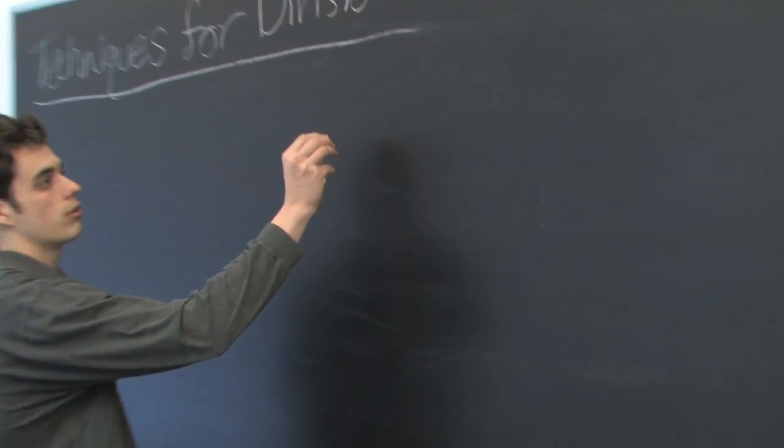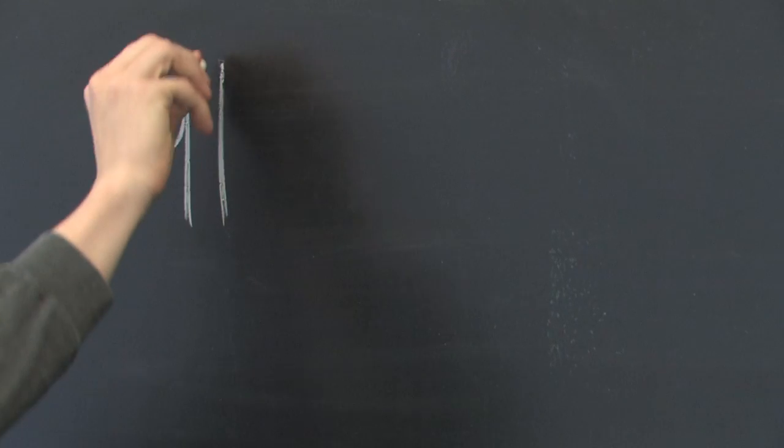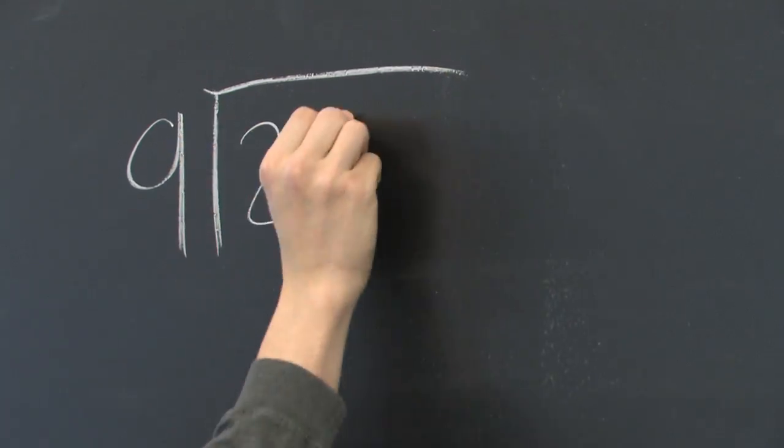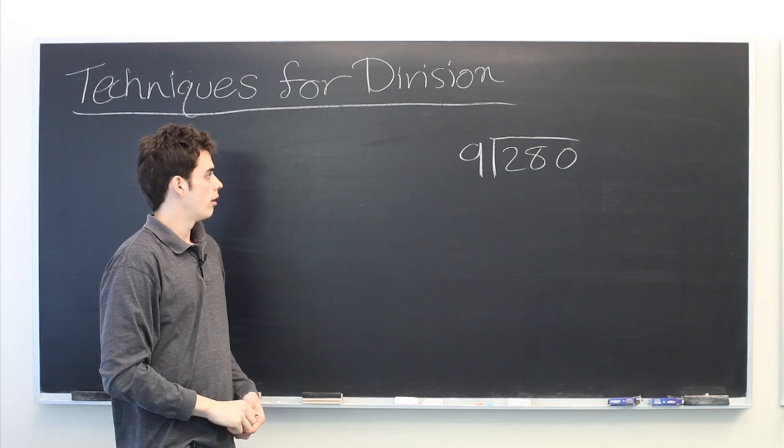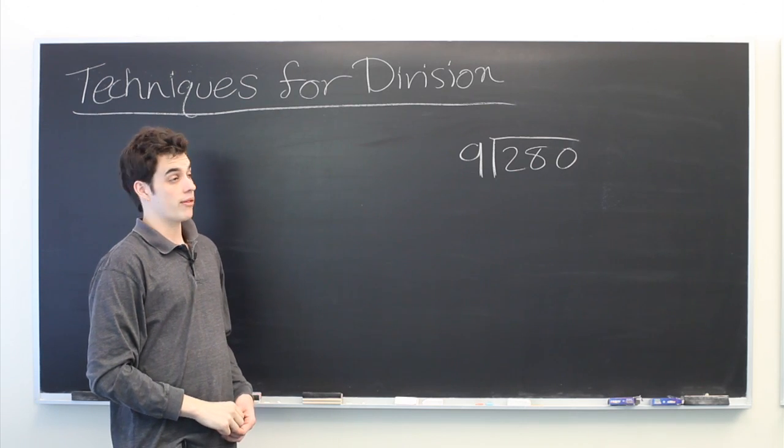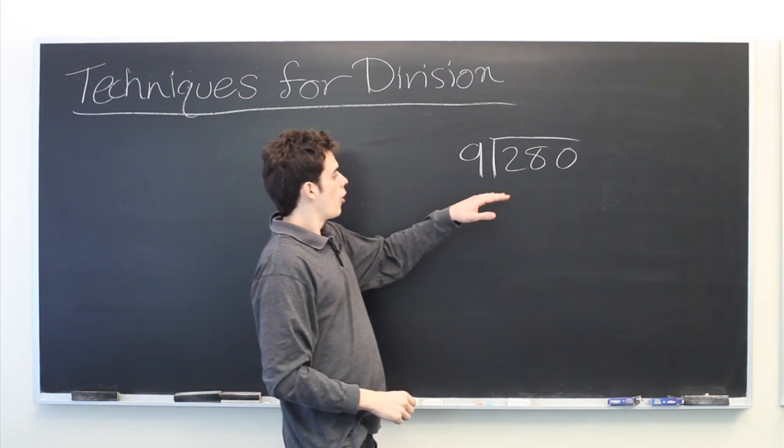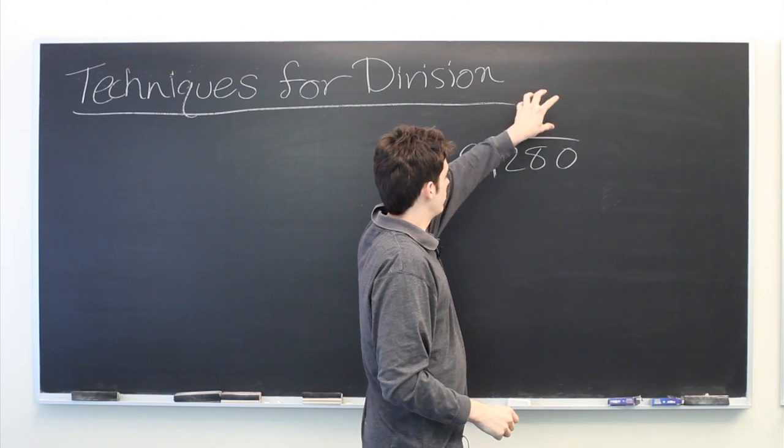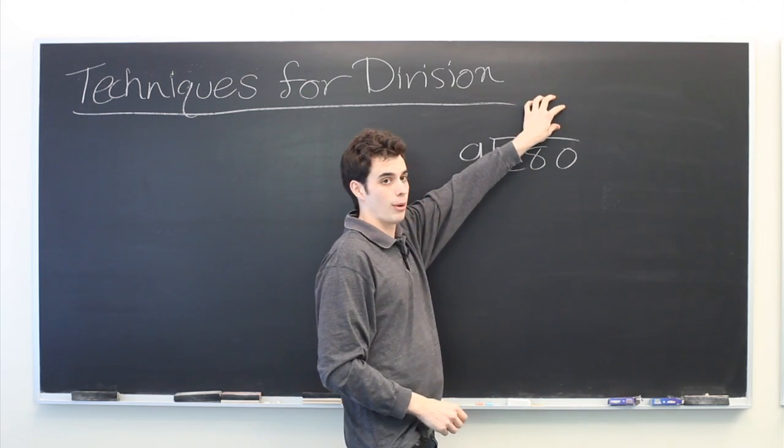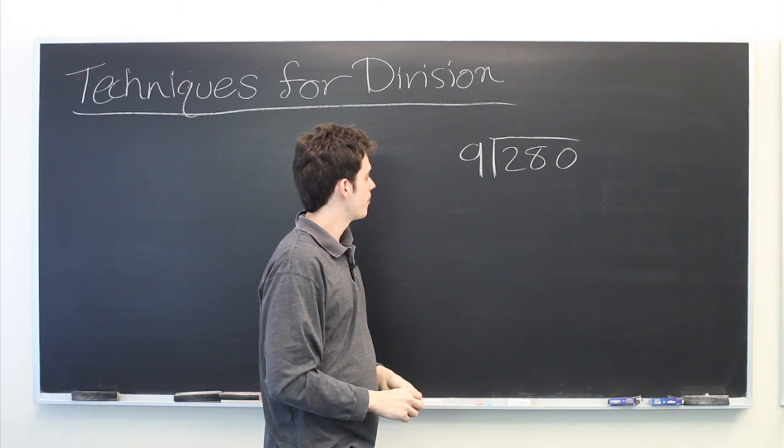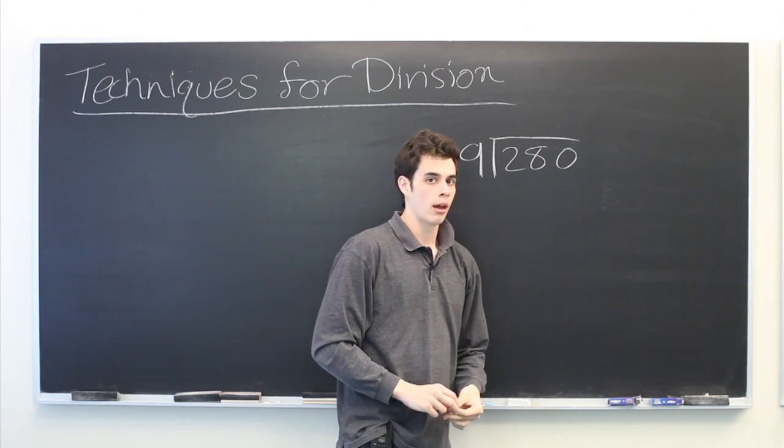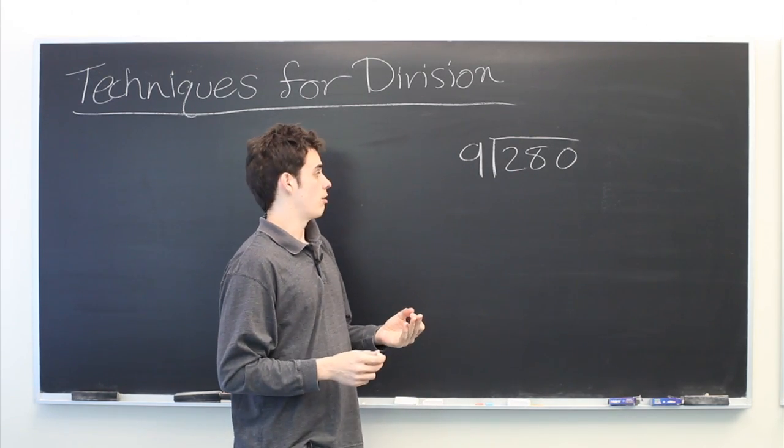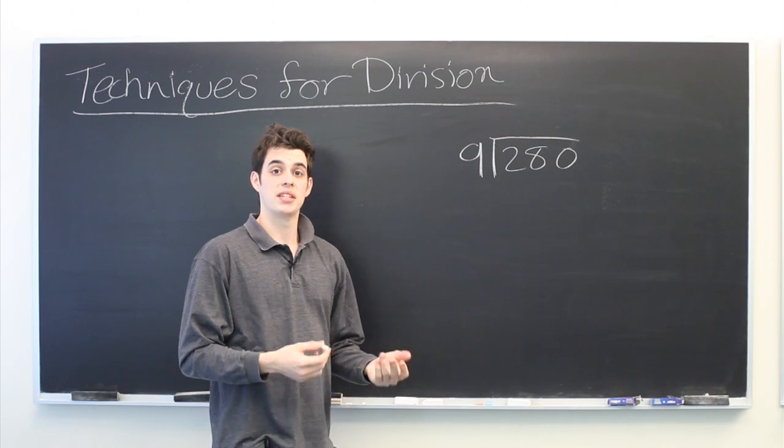Let's suppose that we wanted to divide 9 into 280. A natural question before we even begin is, will this result in a single number that we can multiply 9 by in order to get 280? Or will there be a remainder at the end of the problem? One quick and easy way to determine that right off the bat is the use of divisibility rules.